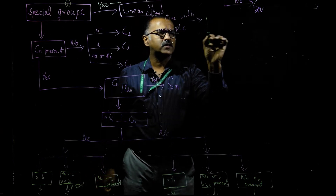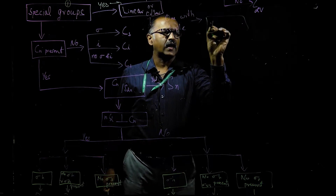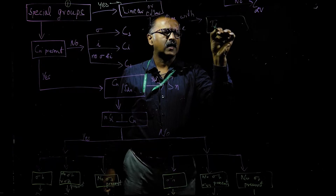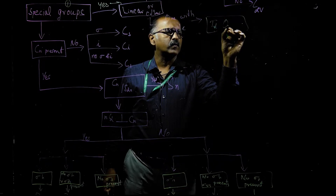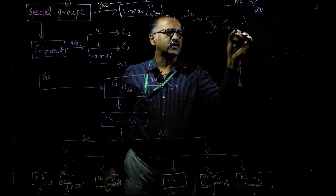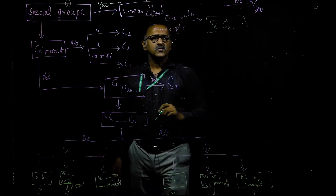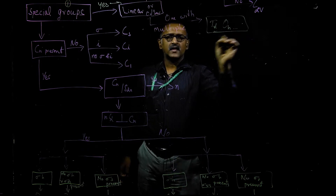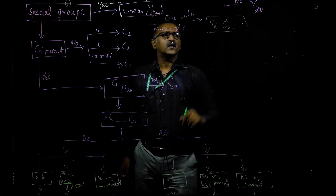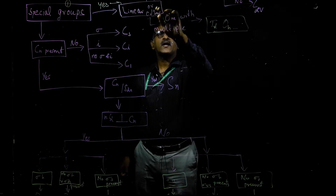The non-linear special group with multiple orders of axis includes tetrahedral, octahedral, etc. Familiar examples are methane and similar molecules.